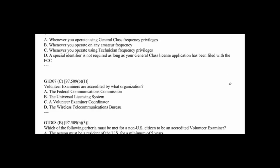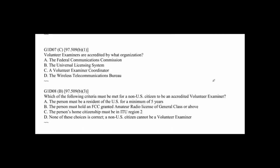G1D07: Volunteer examiners are accredited by what organization? G1D09: How long is a certificate of successful completion of examination, CSCE, valid for an exam element credited? The answer is one year, 365 days.